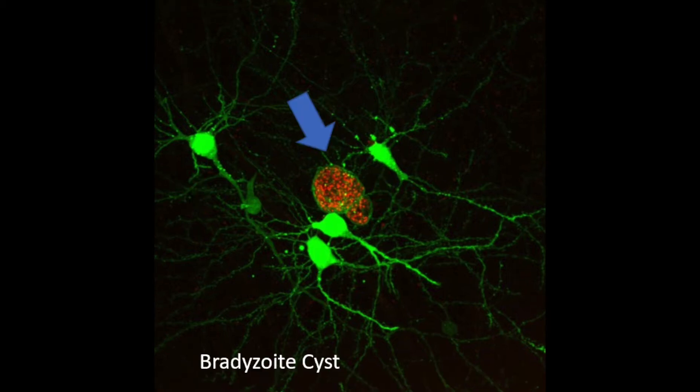This is another form of the parasite, once it enters the brain, called the Bradyzoite — a slow replicating form that forms a cyst.